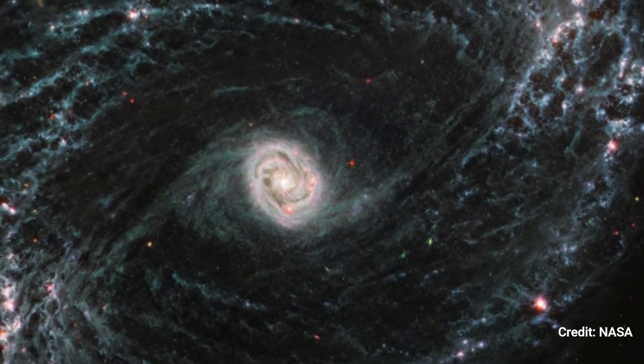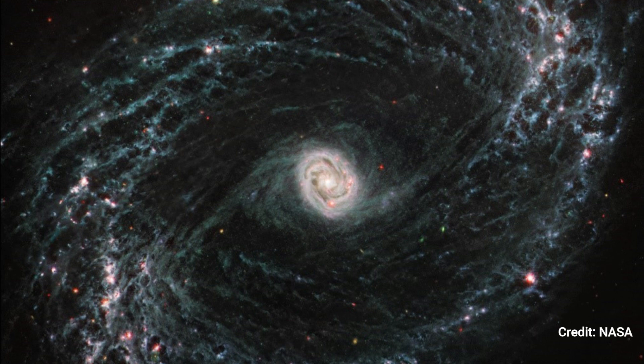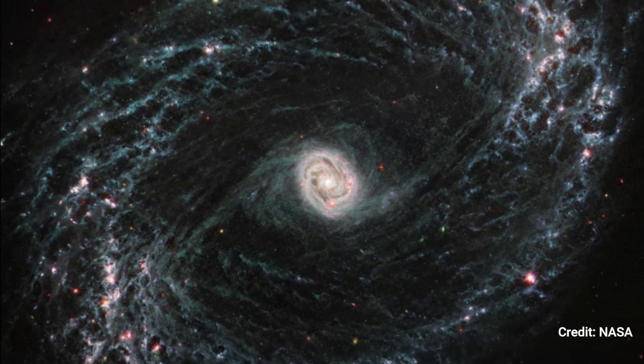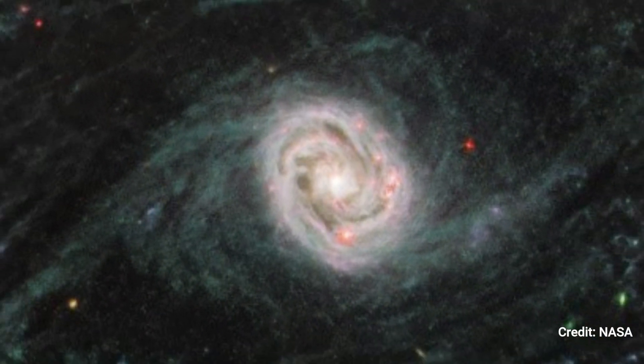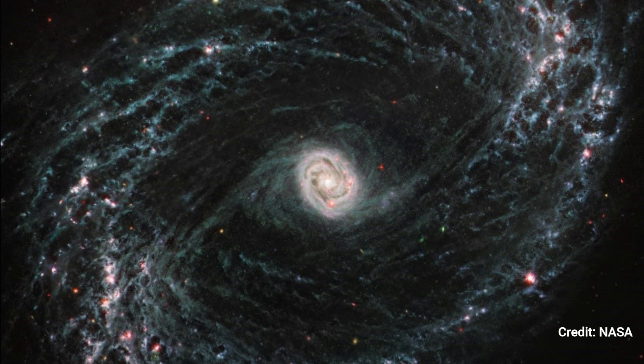NGC 1433 is a Seyfert galaxy, which is normally near to Earth and includes a supermassive black hole at its center that consumes material at a rapid pace. The brightness and absence of dust in NGC 1433's MIRI picture might indicate a recent collision with another galaxy. NGC 1433 is located in the constellation Horologium, approximately 46 million light-years from Earth.